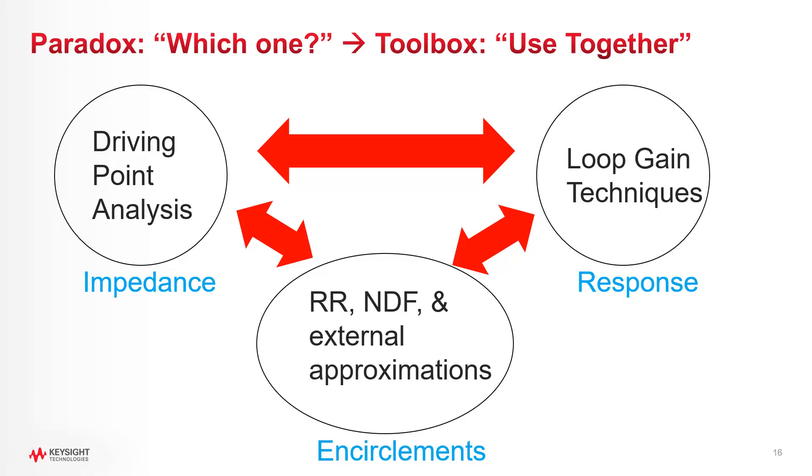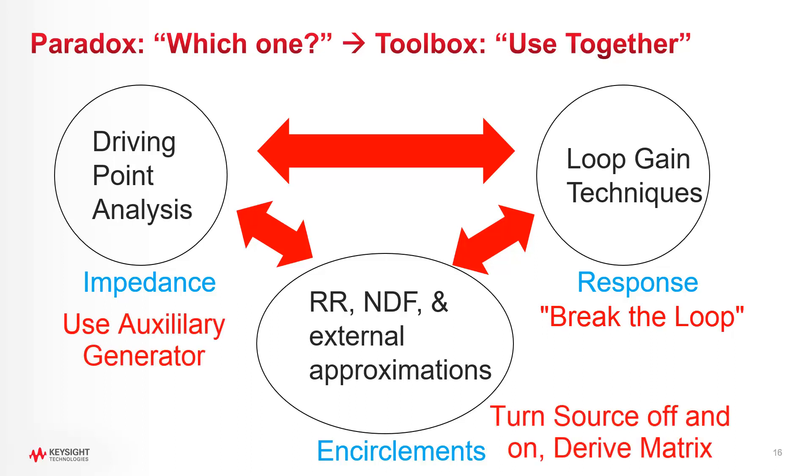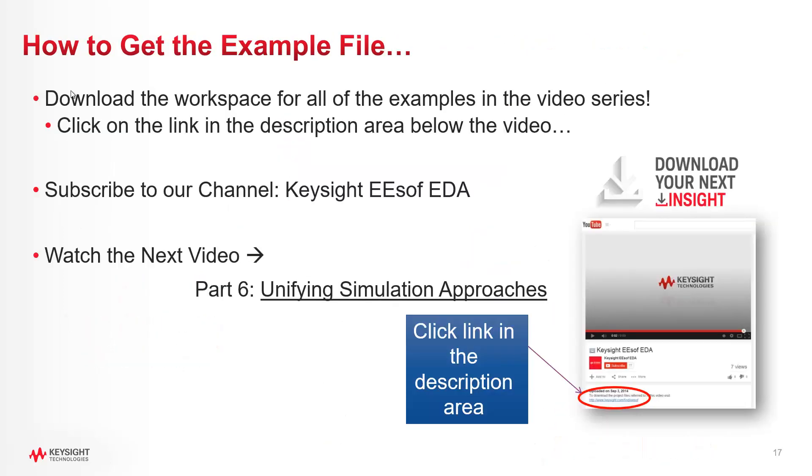The one problem left is that the analysis for each of these methods is completely different. For loop gain, for example, we needed to break the loop. For NDF, we needed to toggle the sources on and off, and for driving point admittance, we needed to use a generator. That's a lot of work. Well, the good news is, in the next video, I'll show you a way to greatly simplify this simulation problem using a new probe called the WS Probe. Until then, be sure to download the workspace and subscribe to our channel for updates. See you next time!